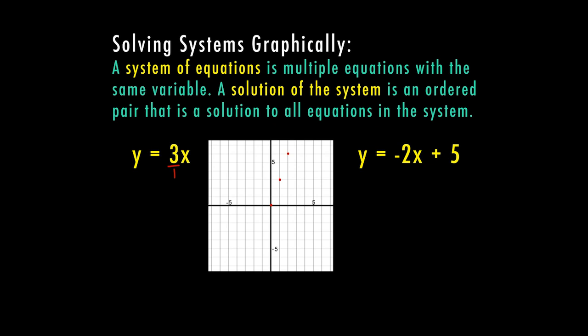I can count again: up 3, right 1 for another point. I can also go down 3 and left 1, because a negative times a negative makes a positive. I can see here that I do have a positive slope. I have enough points now, so I'm going to go ahead and draw my line.